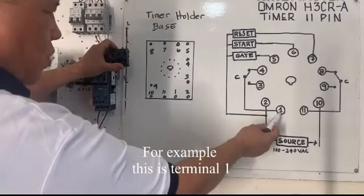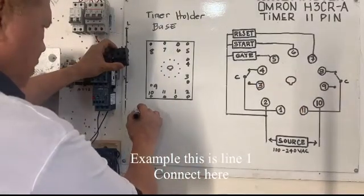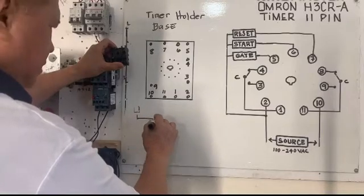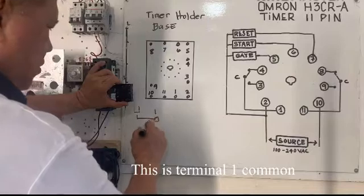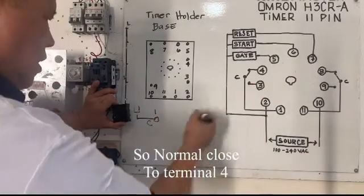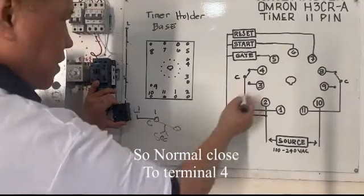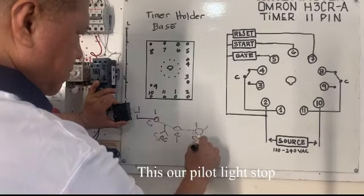Example, this is one, this is only pre-contact. For example, this is your line 1 connect here, this is terminal 1, your common, yan ang common natin. So naka normally close sa terminal 4. Okay, our light stop.